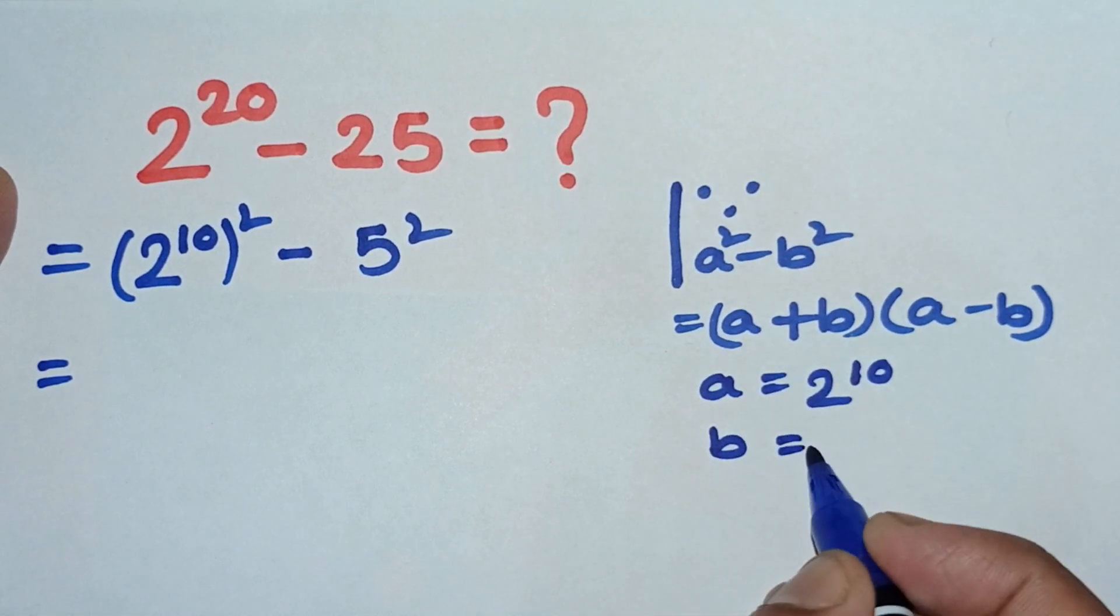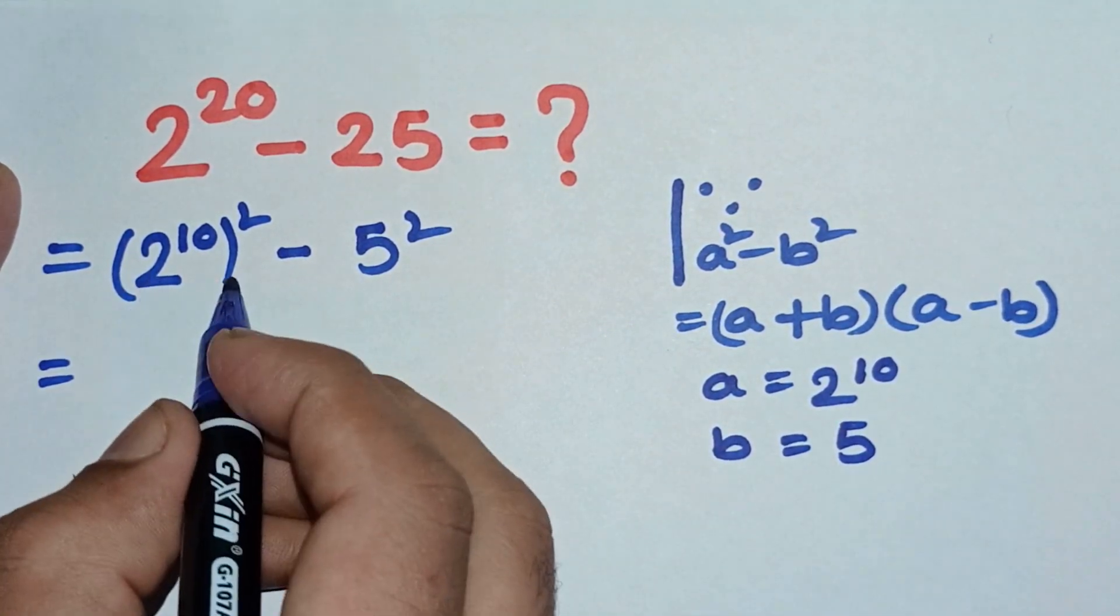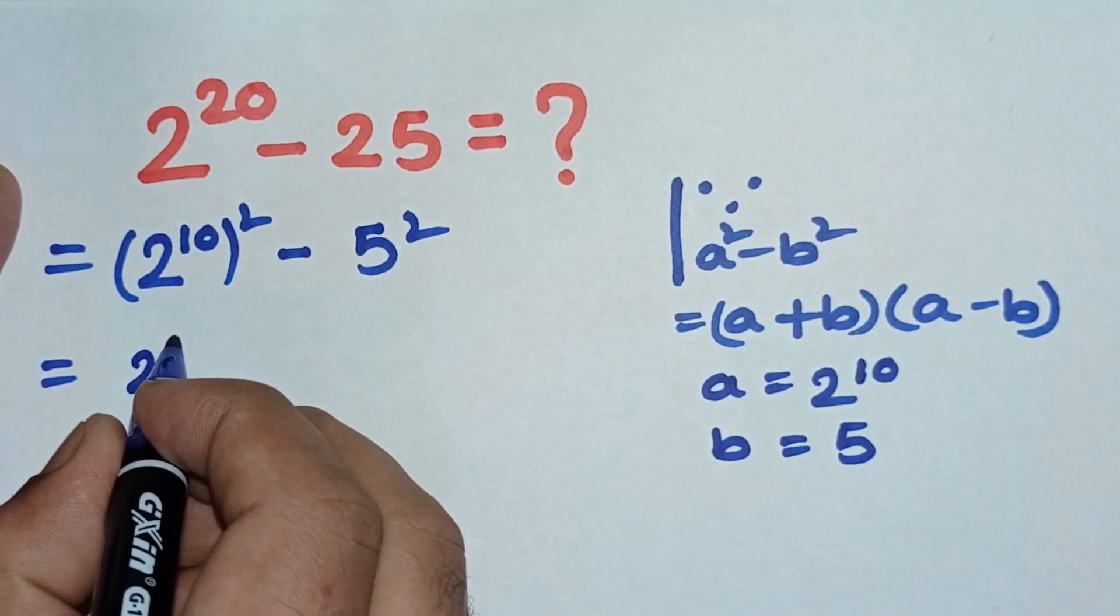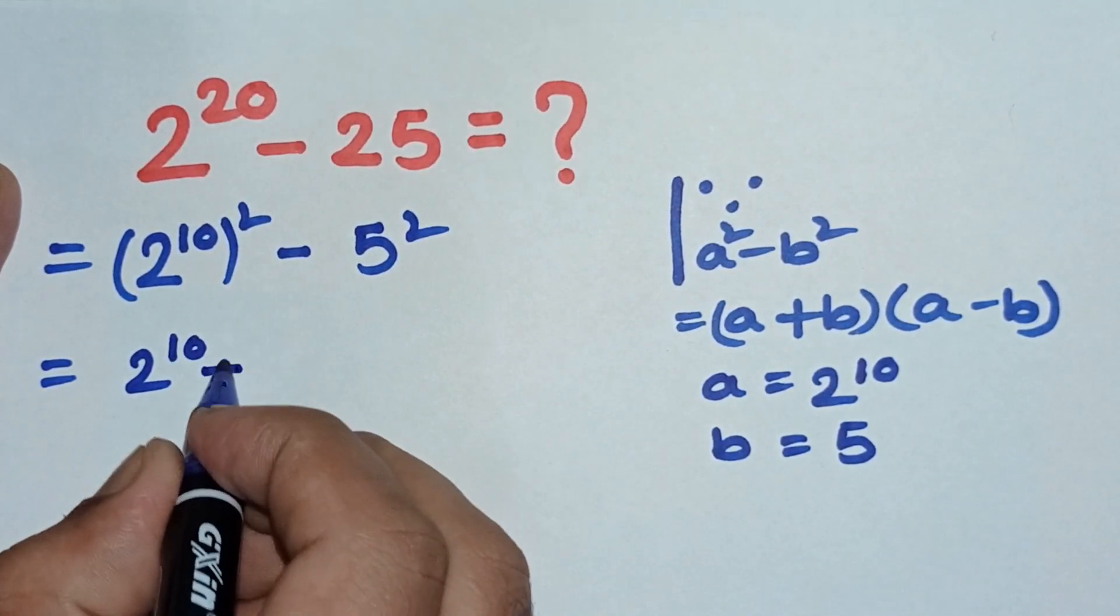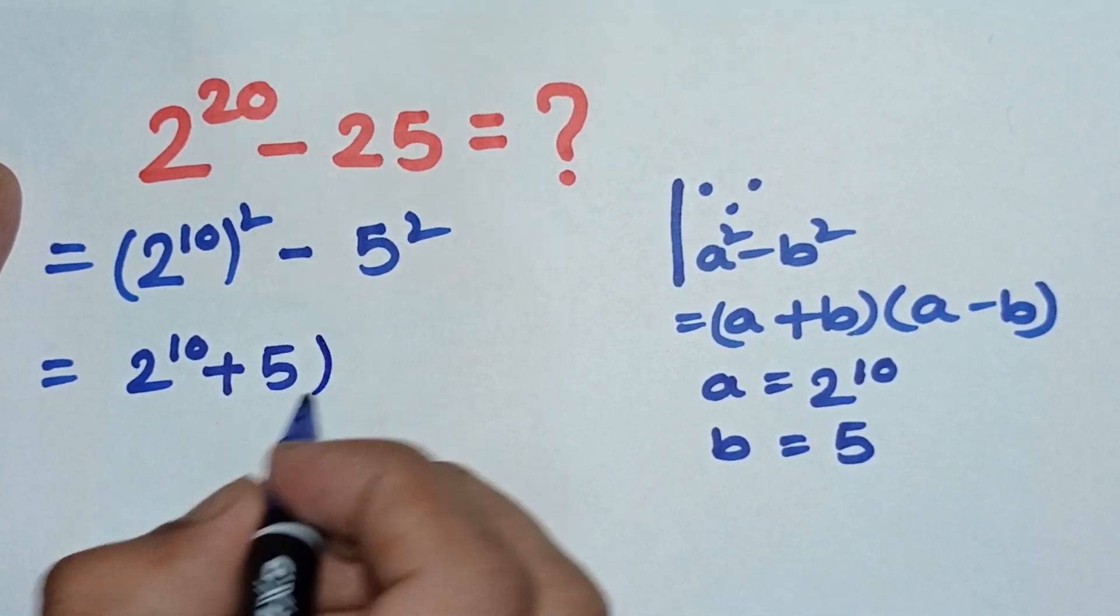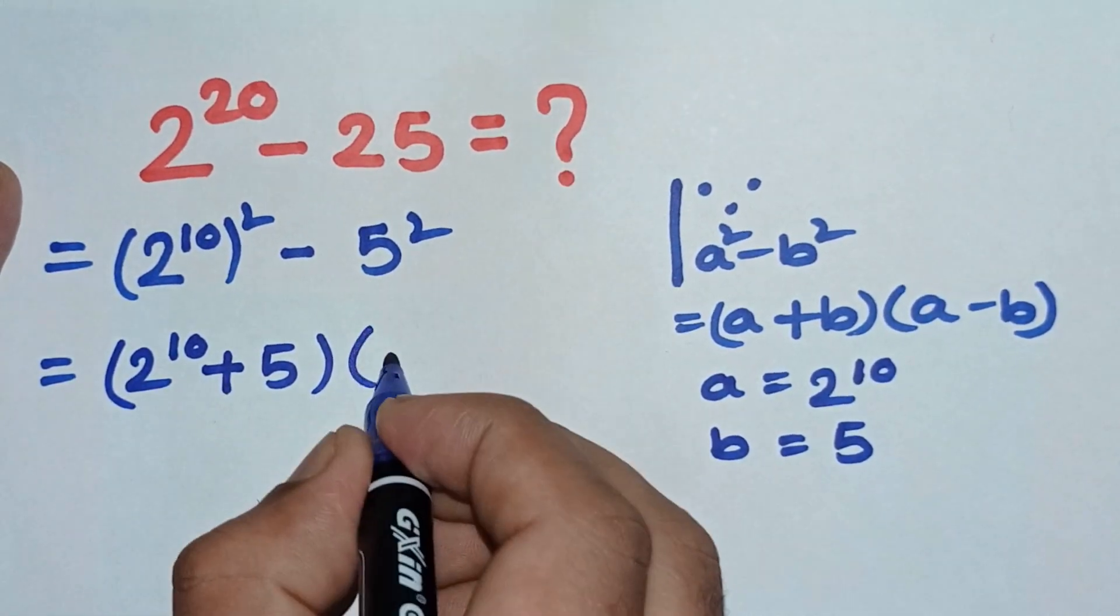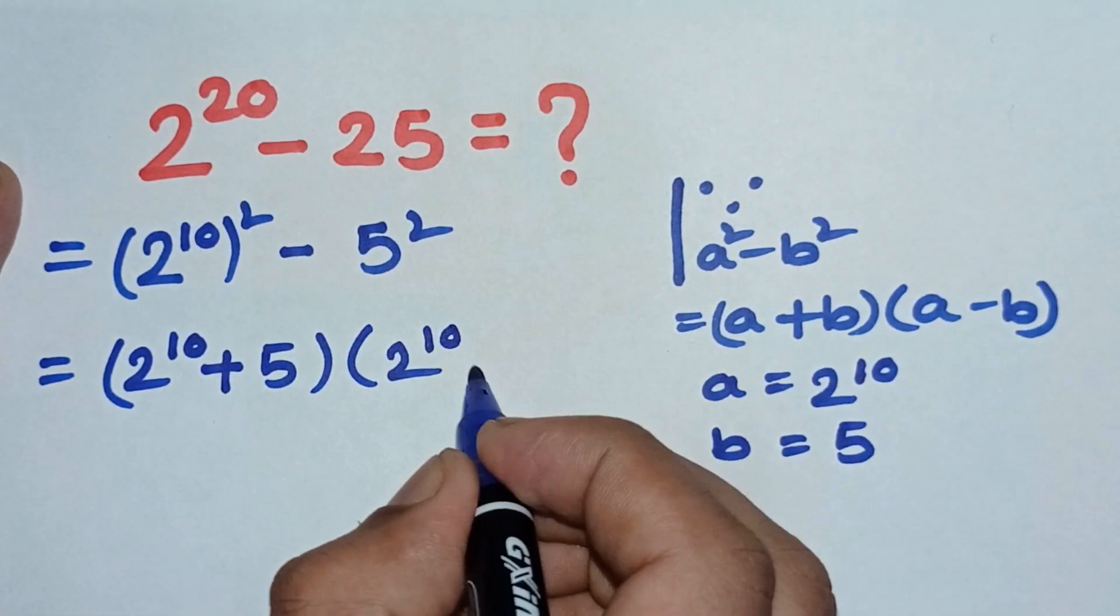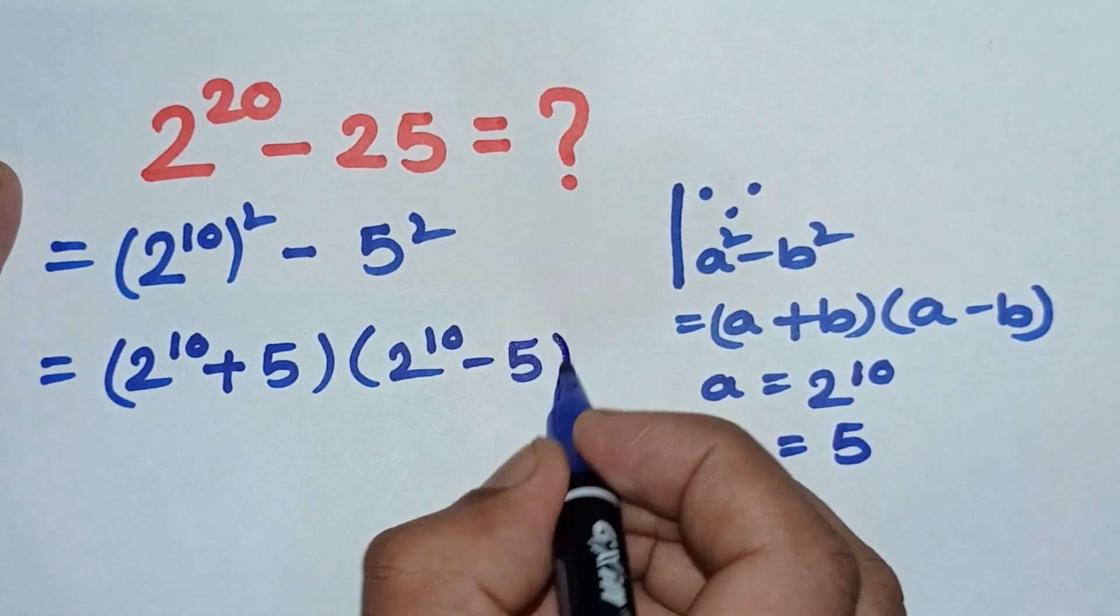Here assume a equals 2 to the power 10 and b equals 5. So we can write 2 to the power 10 plus 5 into 2 to the power 10 minus 5.